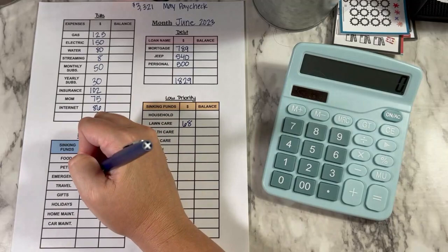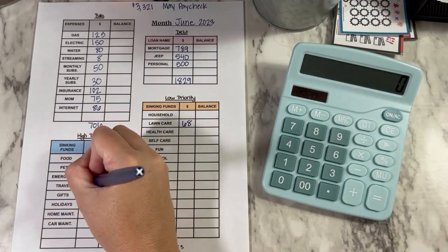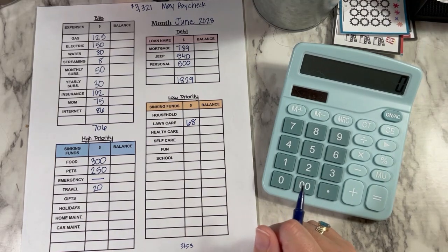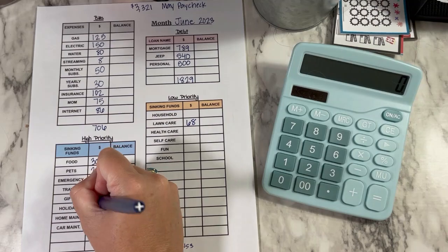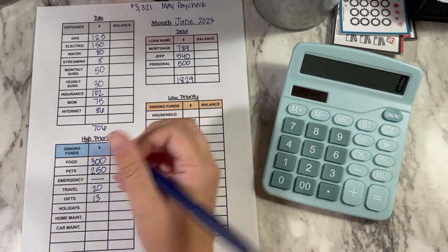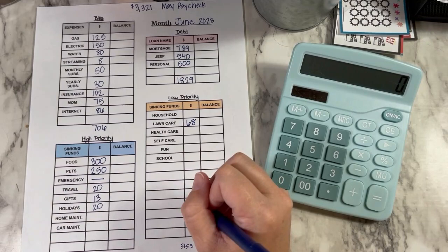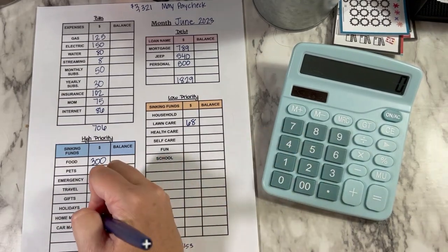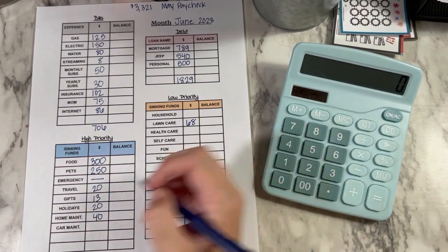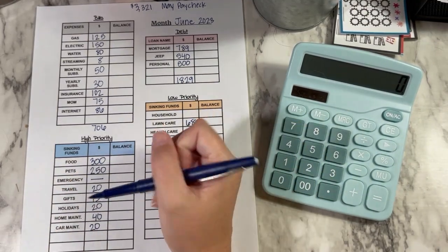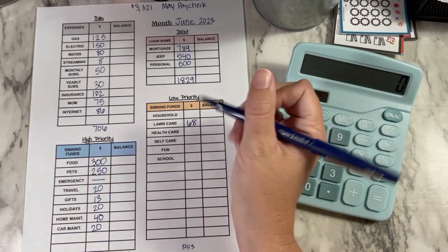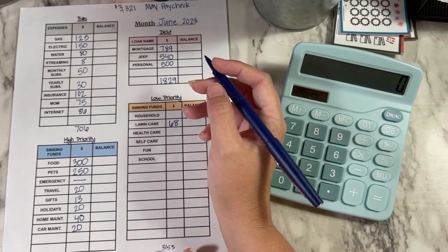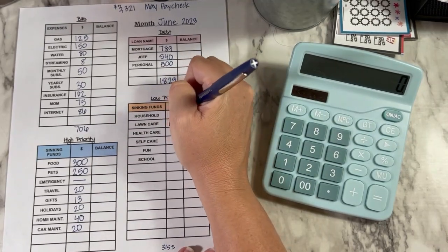So we're going to see what money we can put into our sinking funds here. So I'm not going to add to emergency this time. Travel, I am going to add 20. I should have plenty of spending money for my trip, but just in case we have that little bit of extra. Gifts is getting 13. Holidays is getting 20, and that's for Christmas gifts or any kind of decor for any of the holidays. Home maintenance is getting 40. Car maintenance is getting 20. I'm hoping to save up some money here soon that I can get some new flooring put in my house. But it's going to take a while, I think, to save up that kind of money. Then household is getting 20.